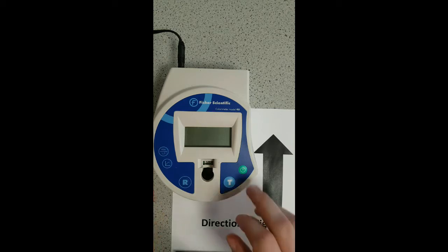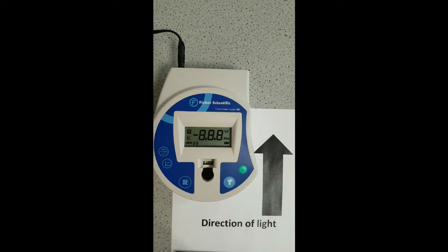This is our colorimeter here. I'm going to turn it on just to allow it to warm up before we run any samples through it. We can cycle between absorbance or transmittance by using this button here, and that's shown on the screen, or we can monitor reactions using the button below. In this video, however, we're only concerned with collecting absorbance value data.